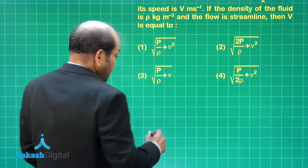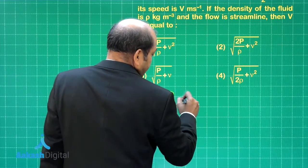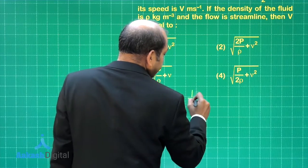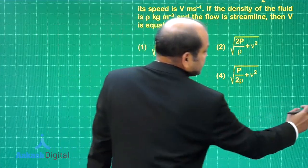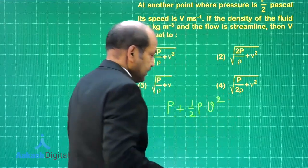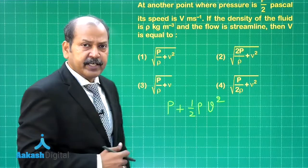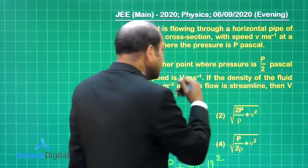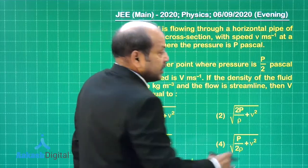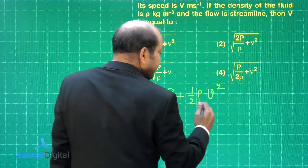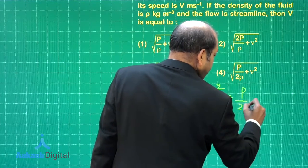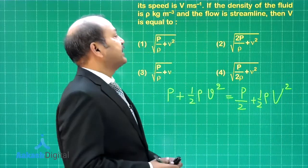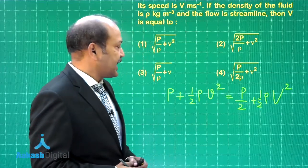Well, the height is same. So pressure at the first point is p, the density of the liquid in fact or the fluid is given as rho. So p plus half rho, in the first case it is small v square. Height being the same, we do not have to take the rho gs term. And for the second point, the speed becomes V and the pressure becomes p by 2. So in that case, the equation is p plus half rho v square is equal to p by 2 plus half rho capital V square. And we have to find or rather extract the expression for capital V from this equation.